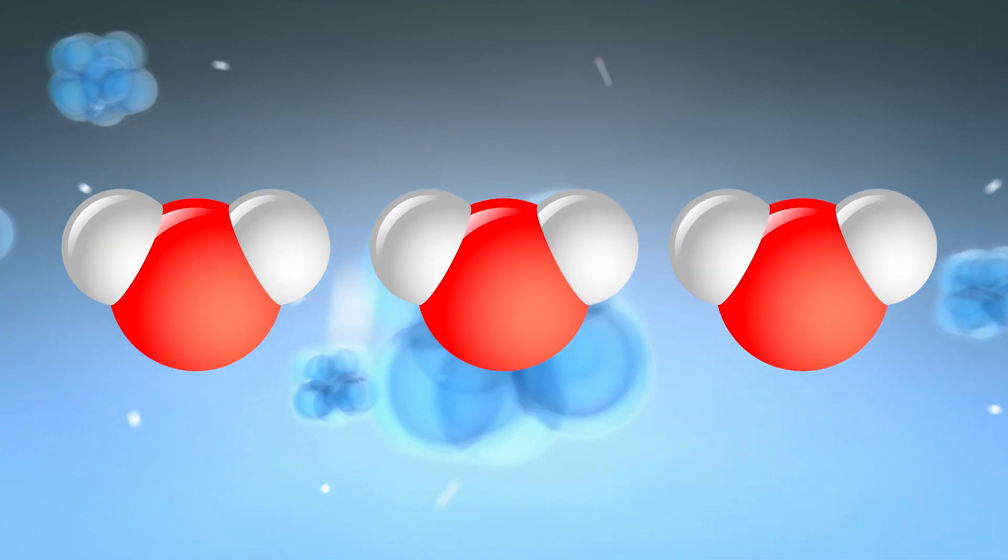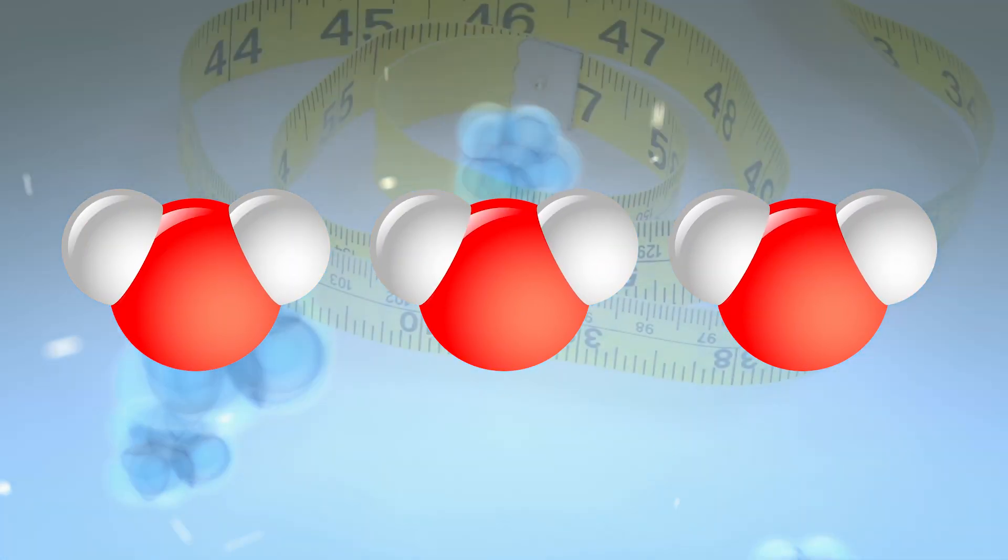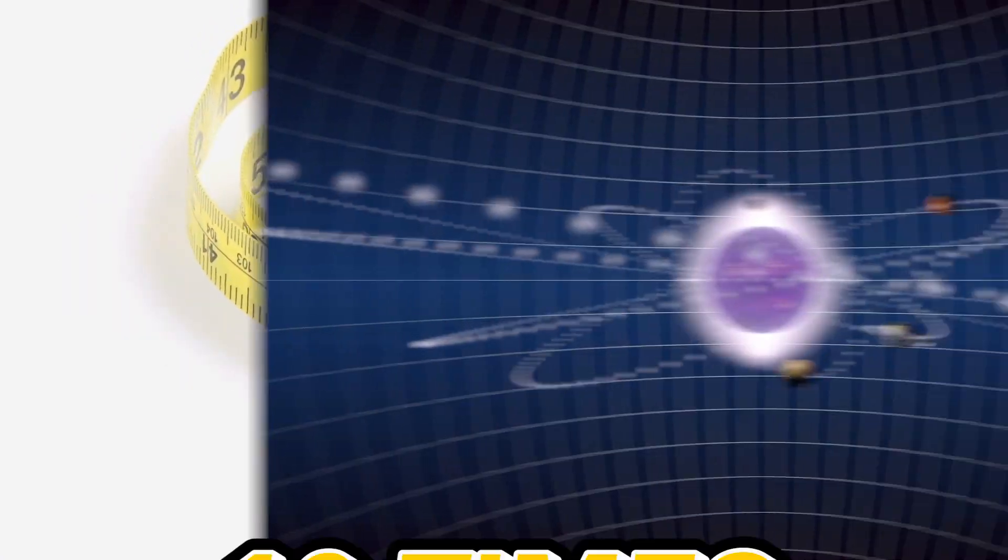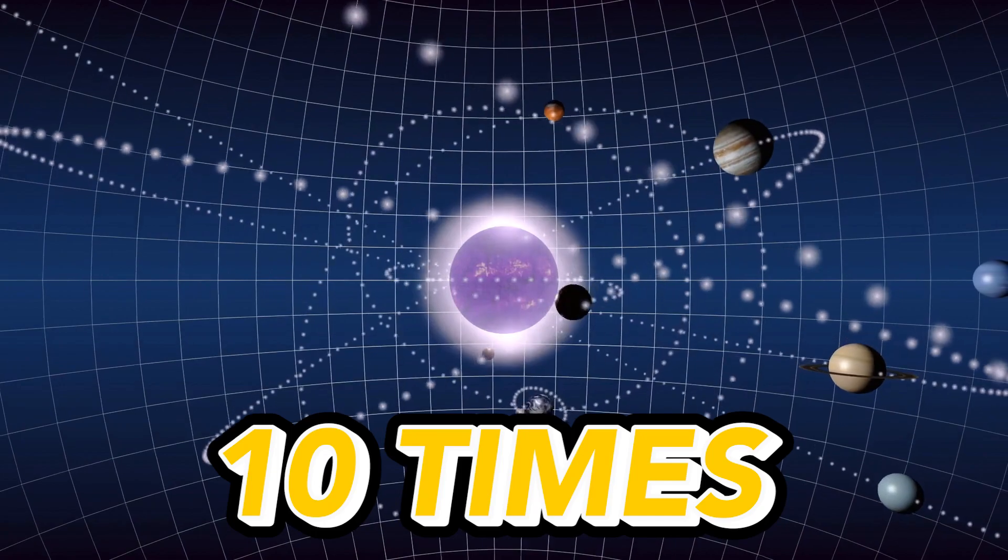All that said, if you laid down each water molecule from a teaspoon down end to end, you'd end up with a length of 50 billion kilometers. That's ten times the width of our entire solar system.